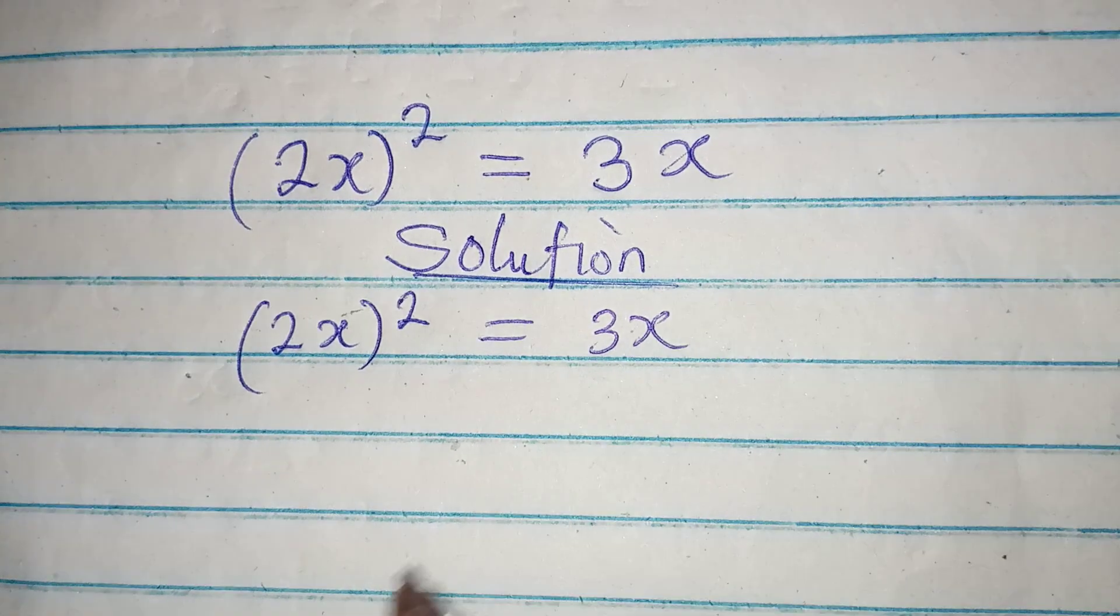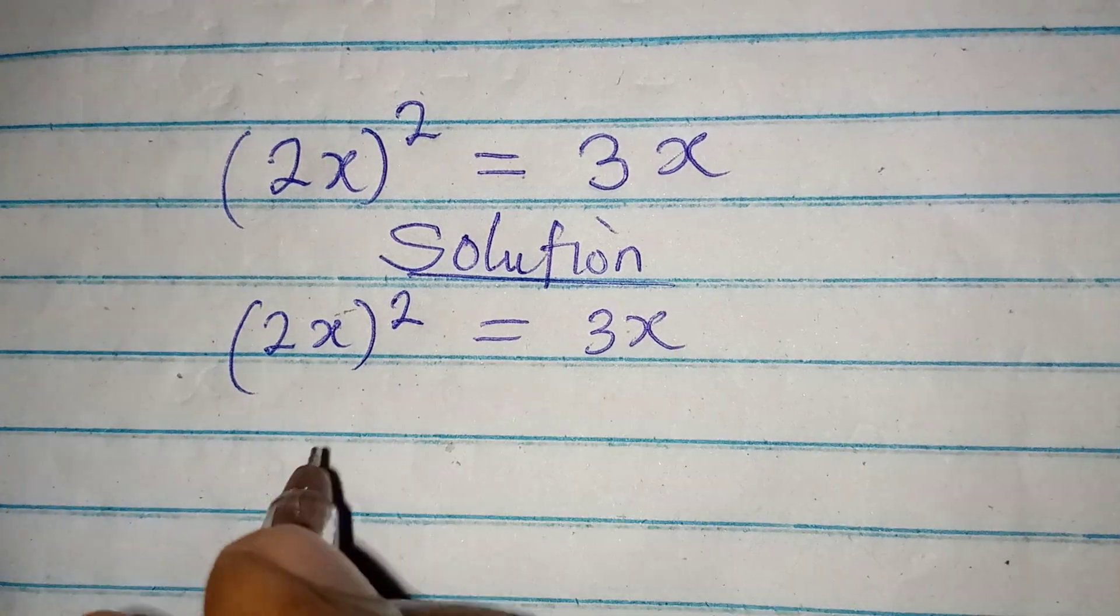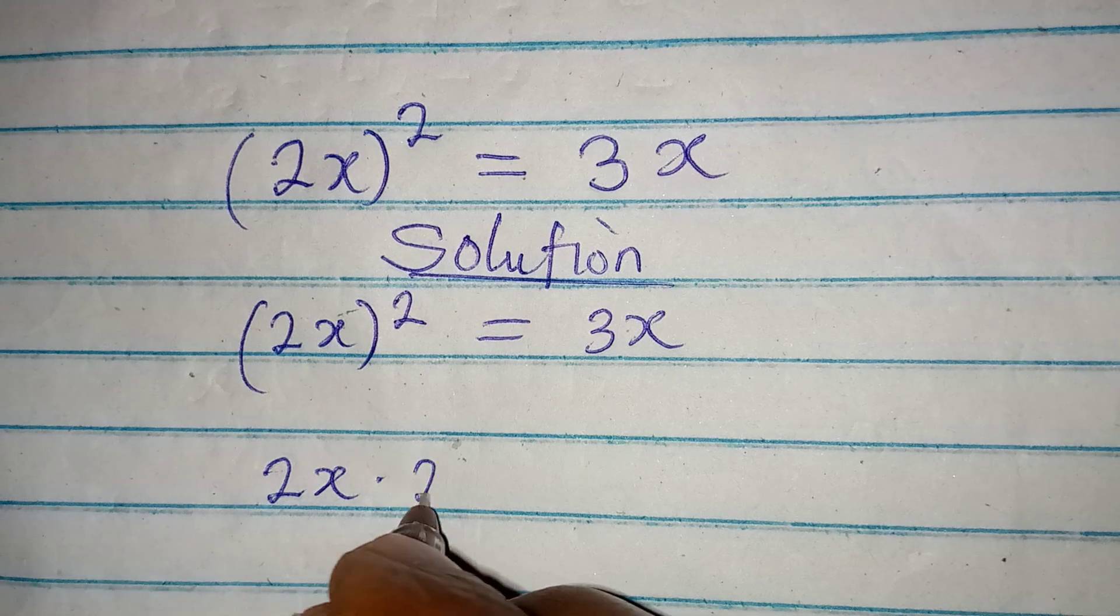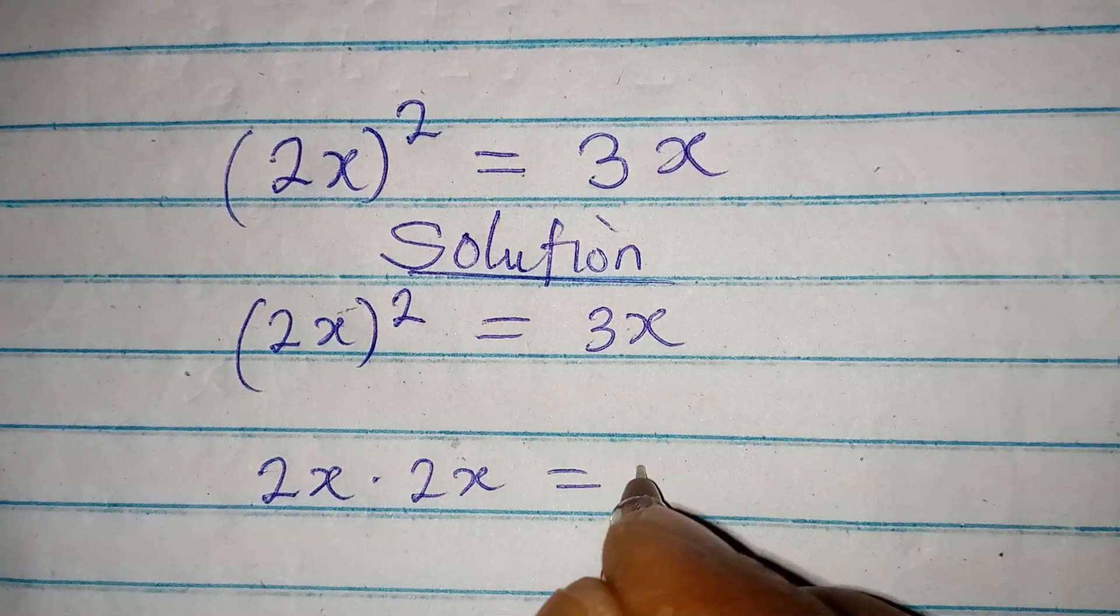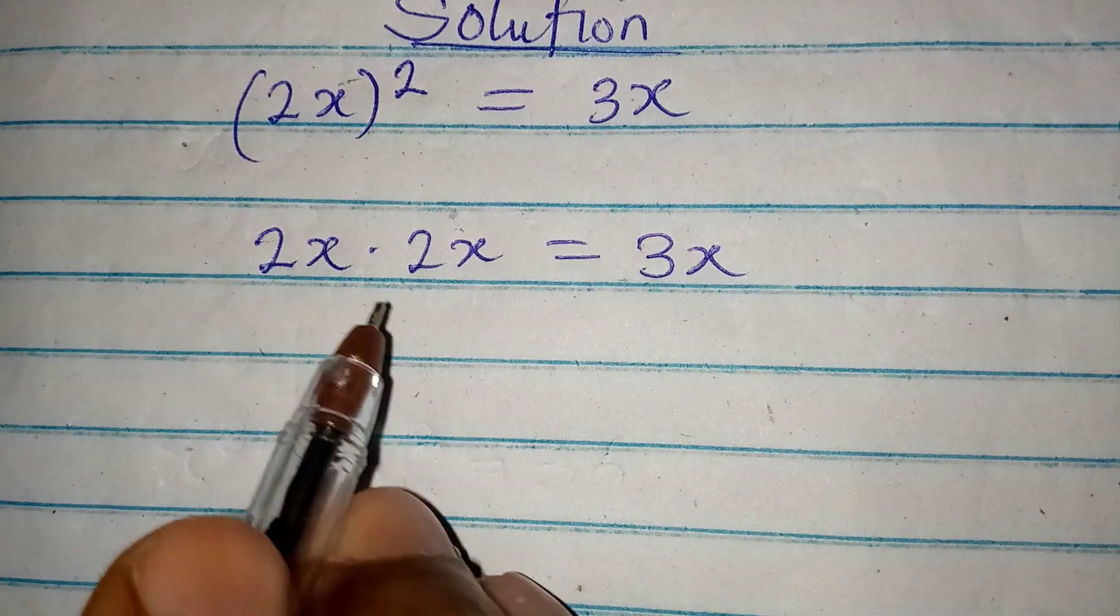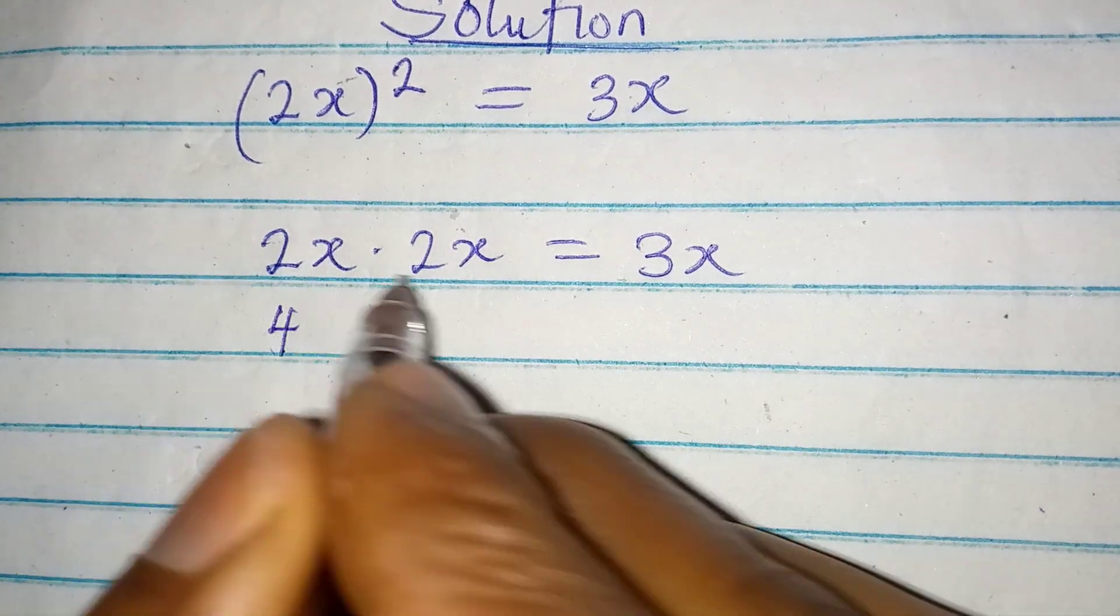Now how do we solve this problem? Open this bracket first, so we have 2x multiplied by 2x, and this is equal to 3x. The next thing is multiply what we have here: 2 times 2 is 4, x times x is x², and this is equal to 3x.